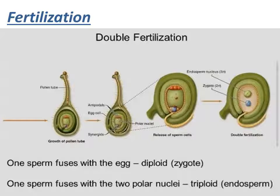The pollen tube allows entry of male gametes into the embryo sac. The first male gamete fuses with the egg to form a zygote — this is called syngamy or generative fertilization — and this diploid zygote will finally develop into the embryo. The other male gamete fuses with the two polar nuclei to form the triploid primary endosperm nucleus (PEN), called triple fusion or vegetative fertilization. Together, syngamy and triple fusion constitute the process of double fertilization. This process was first demonstrated by Navashin in 1898 in the Lilium plant.